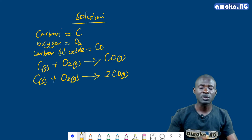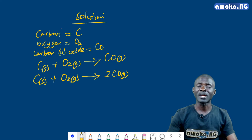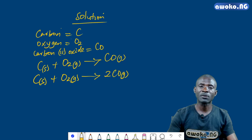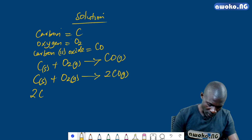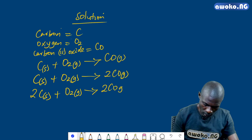I've now balanced the number of oxygen by introducing two moles of CO on my right-hand side — two atoms of oxygen on the left and two moles of carbon monoxide on the right. However, in trying to balance the oxygen, I have altered the number of carbon. So to balance carbon, I will add two moles of carbon on the left-hand side, giving 2C plus O2 gas to produce 2CO gas.